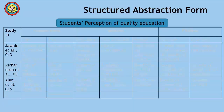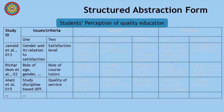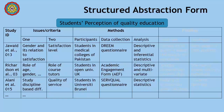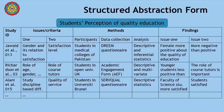In column one of this form, we entered study identification. The second column was filled with the issues studied in the available literature. In the third column, we filled in three major aspects of research methodology: the participants, data collection method, and analysis procedure. The fourth column was filled with findings related to the issues included in the second column.